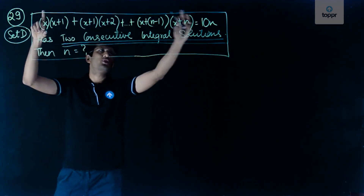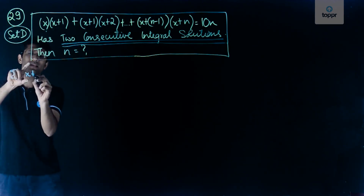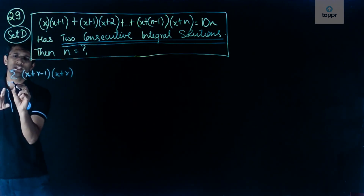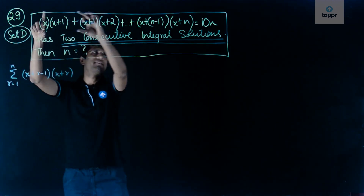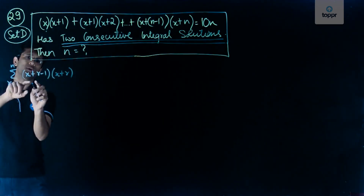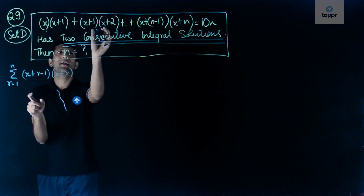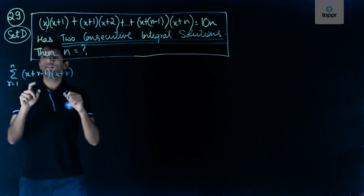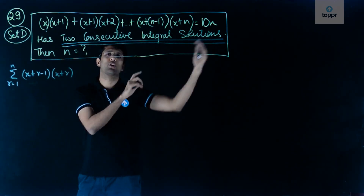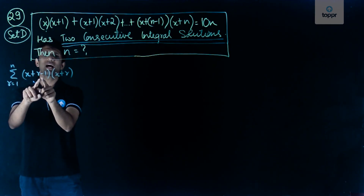If you look at the left hand side correctly, you can rewrite this as summation of (x + r - 1)(x + r) where r ranges from 1 to n. So if you put r = 1 you get x and x+1 as the first term. If you put r = 2 you get the second term, r = 3 the third term, and so on till you get to the final nth term.